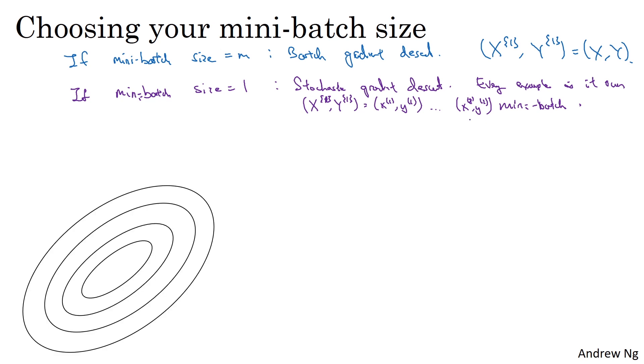So let's look at what these two extremes will do on optimizing this cost function. If these are the contours of a cost function you're trying to minimize, then batch gradient descent might start somewhere and be able to take relatively low noise, relatively large steps, and just keep marching to the minimum.